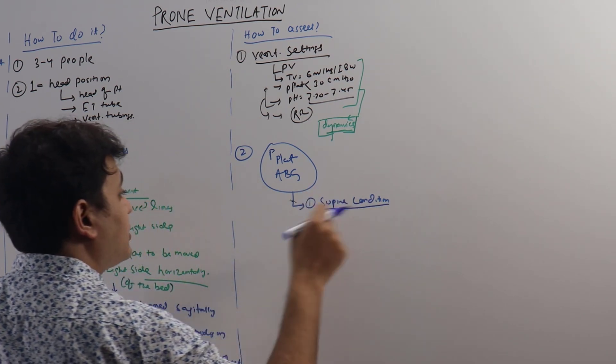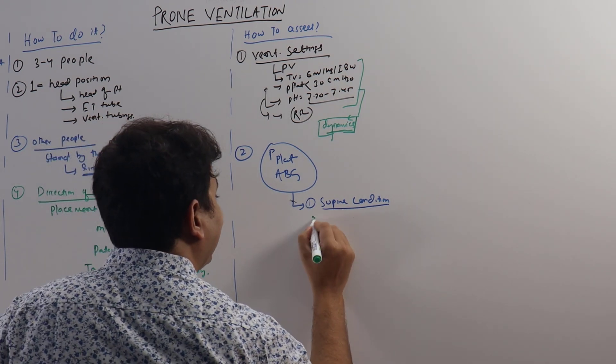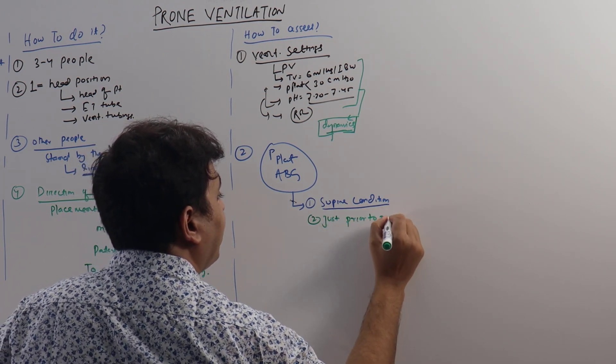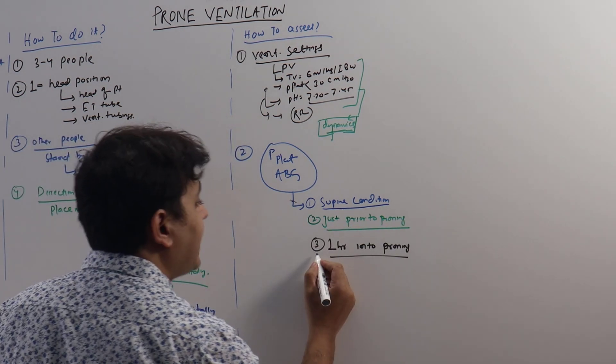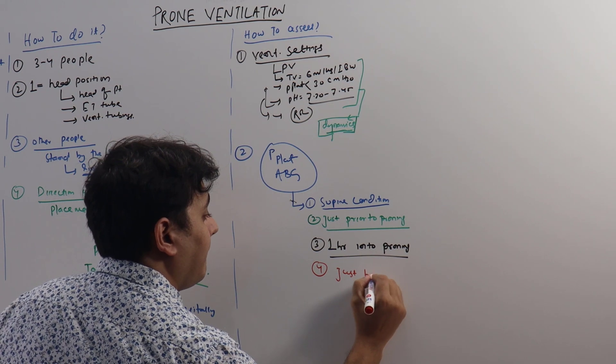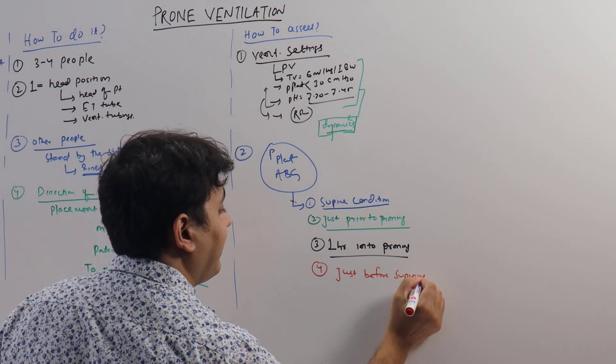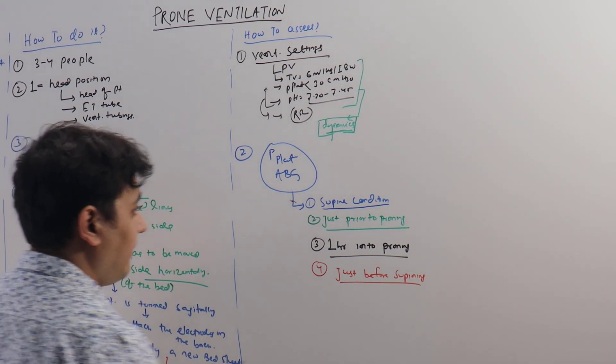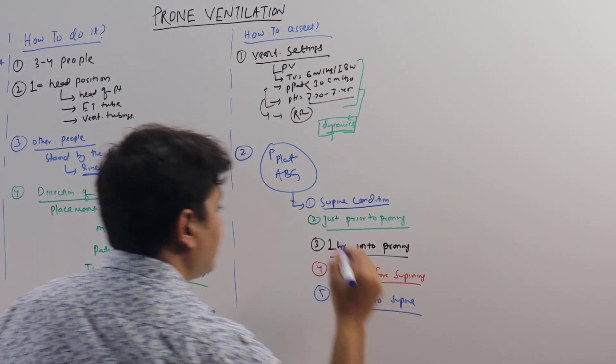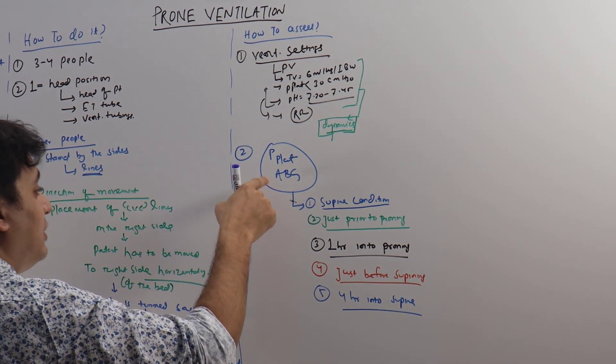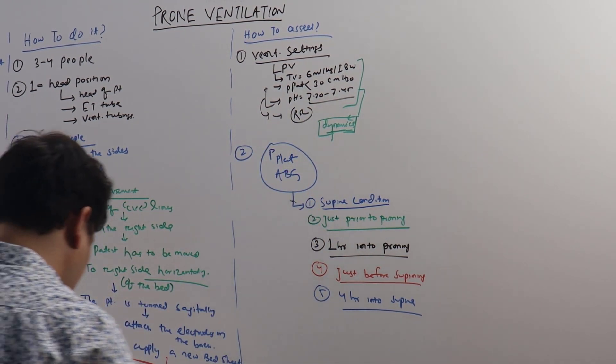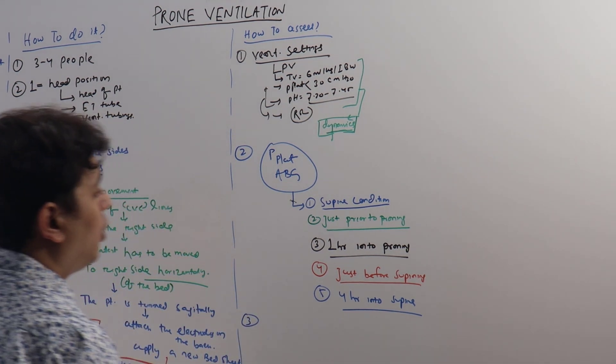The person first will be optimized or stabilized. At that time you have to have an ABG. On the basis of that ABG only we are putting the patient in prone position. Second check will be done just prior to proning. Third is one hour into proning. Fourth, just before supining. And fifth, four hours into supine. These are the times when we have to check for the P-plateau and ABG. For P-plateau and ABG, you have to adjust the ventilator settings accordingly.